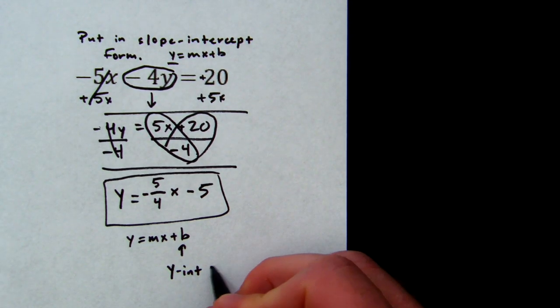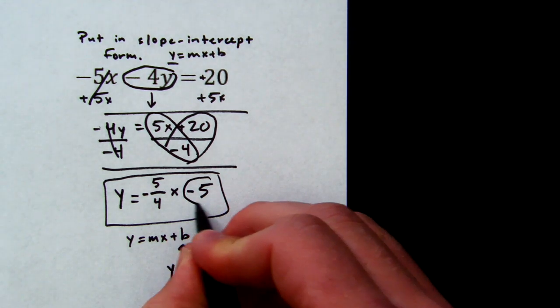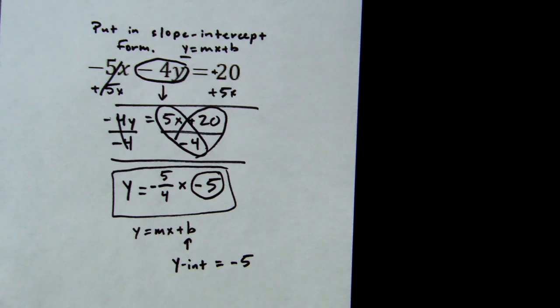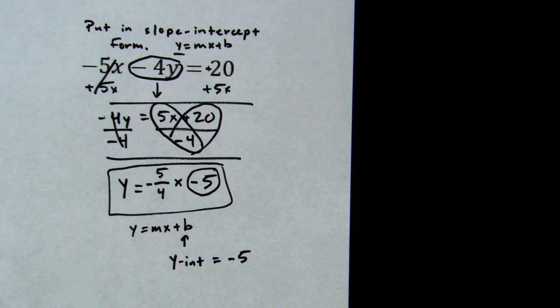In this equation, our y-intercept is going to be this number right here, -5. And remember, the y-intercept is where the graph, where this equation is going to cross the y-axis. So the y-intercept is -5 for the next problem.